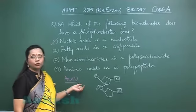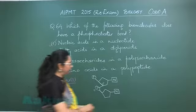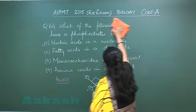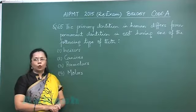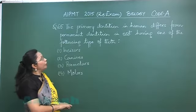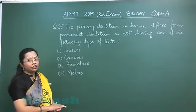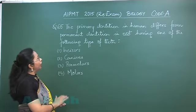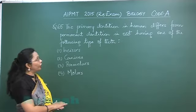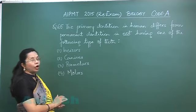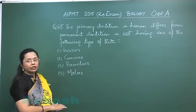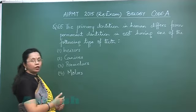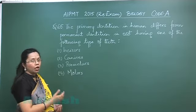Let's move on to question 65. Primary dentition in humans differs from permanent dentition in not having one of the following types of teeth. In milk dentition there are only 20 teeth, while in permanent dentition there are 32.